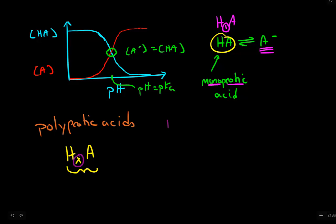Examples of this would be something like H2A. This is a diprotic acid. An example of a diprotic acid is sulfuric acid. Sulfuric acid can donate two protons.